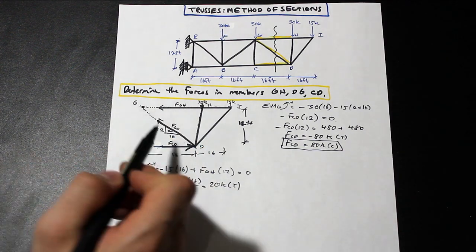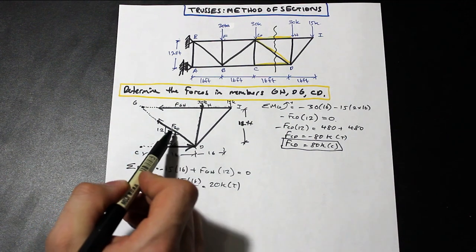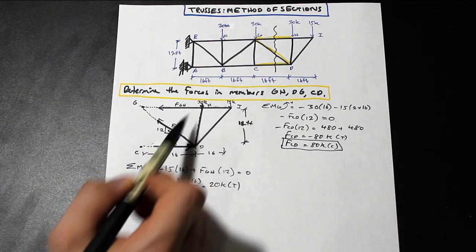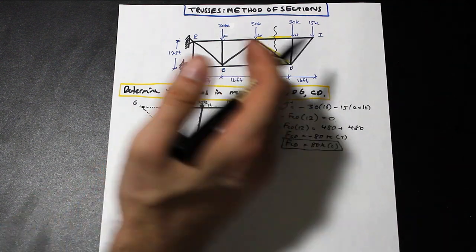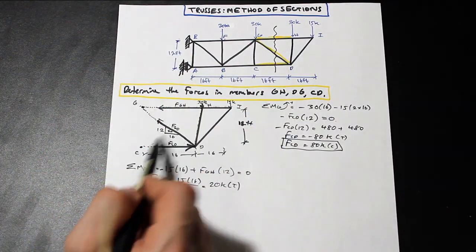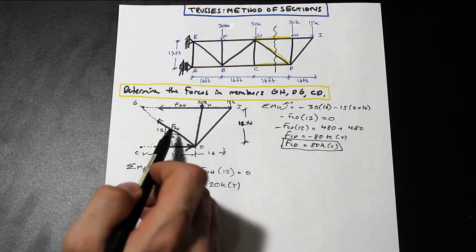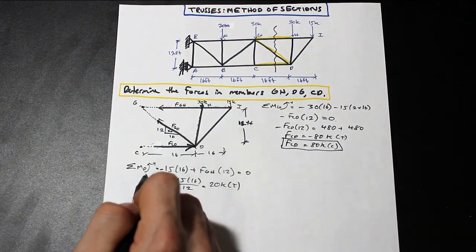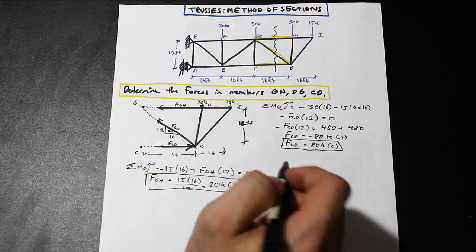Let's go ahead and let's solve for the last unknown, FGD. Now that we have FGH and we have FCD, we know all of the forces in the X direction or the Y direction other than FGD. So we can select one of them, and we can use that to solve. So let's try X. So let's take the sum of the forces in X. We'll say that right direction is positive.